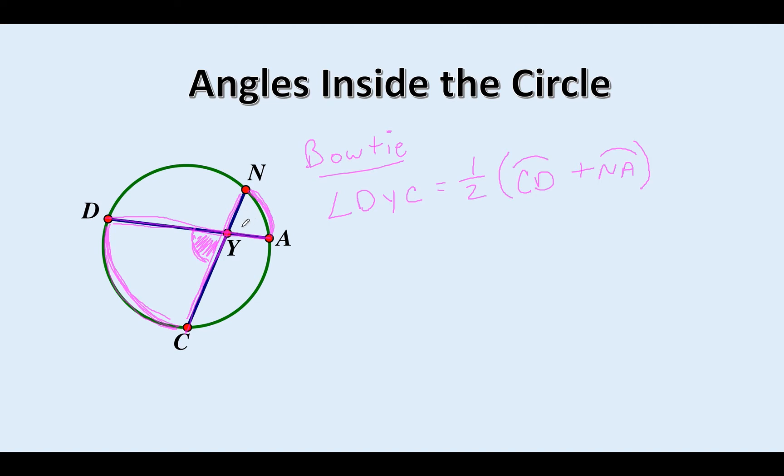I could have done angle NYA, but we know that these two angles are equal because they are vertical angles. Now let's take a look at this other bow tie that's formed with the green arcs. That has to follow the same rule. Which angle is inside that bow tie? Angle DYN, or this one here, AYC, which is equal to one half this green arc DN plus this green arc down here AC, because that makes the bow tie. Pretty straightforward example.